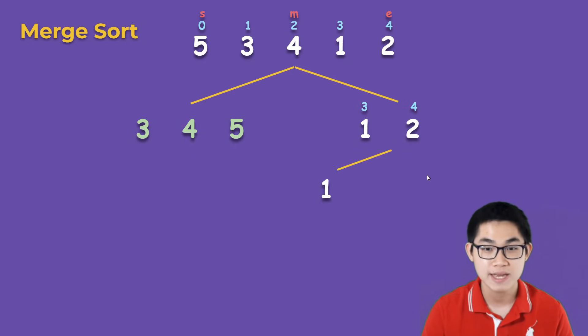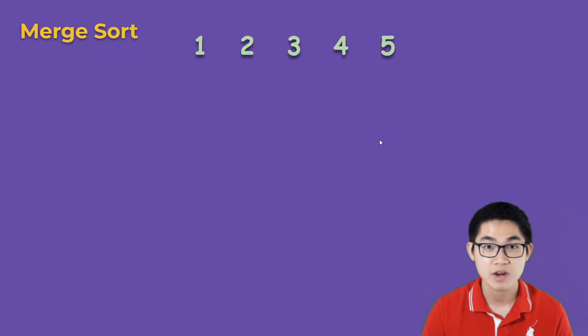And don't worry, I'll explain what merge does in a second. Now lastly, the second group is going to be 1, 2, and then you split it into 1 and then 2, you merge it and you still get 1, 2. Then finally you merge all of these numbers together and you get 1, 2, 3, 4, 5. At this point merge sort is complete.